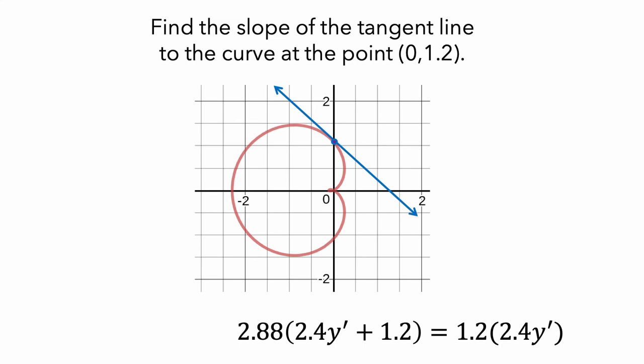By combining like terms and doing some more computation, we can get that y-prime equals negative 0.86, so that is the answer to our question. The tangent line to the curve at the point has slope negative 0.86.